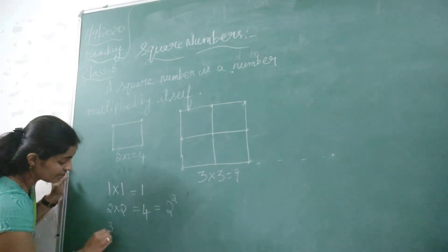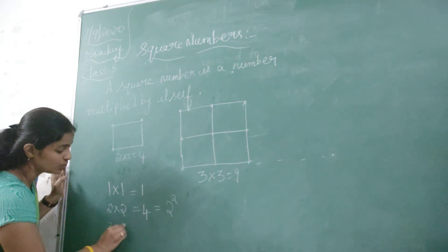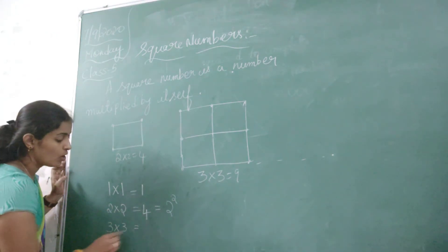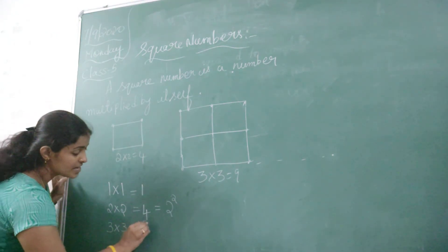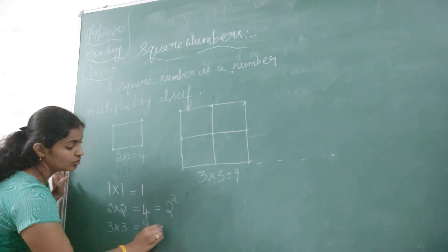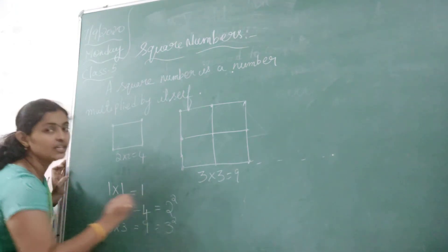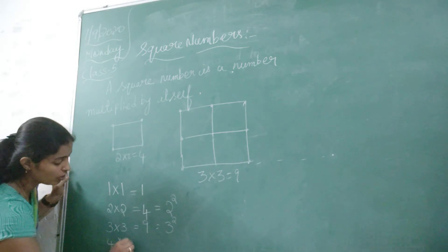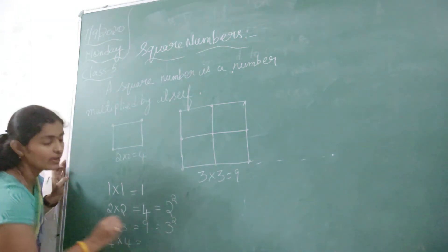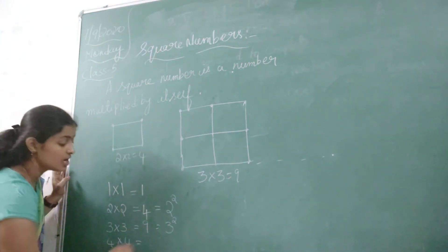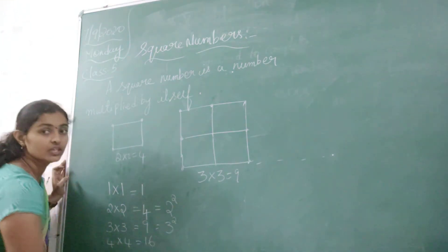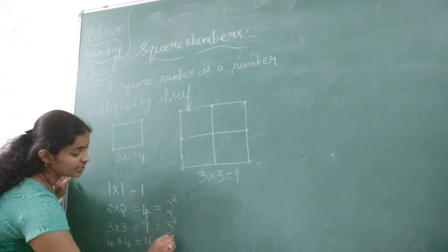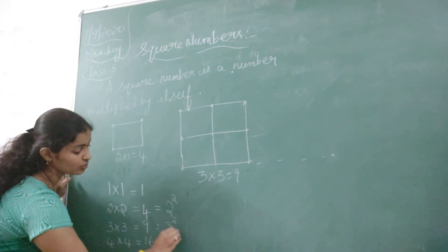If I am taking the number 3, 3 into 3, or 3 multiplied with 3, what I am going to get? 9. So that is 3 squared. And 4 into 4, how much I am going to get here? 16. That is 4 squared.